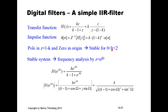To analyze the frequency behavior, for a stable system we substitute Z = e^(jω), yielding the frequency transfer function. Developing the amplitude characteristics from this expression gives a closed-form result, which we then plot for different values of K.